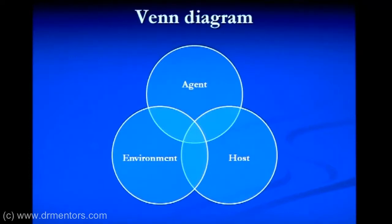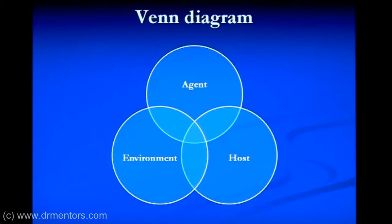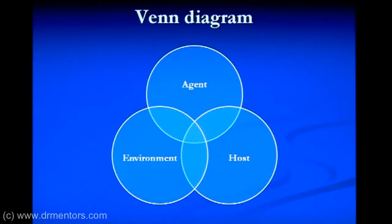This is a Venn diagram, where some factors are related to individual circles and some factors are common — the overlapping of circles indicates those common factors. Here, an epidemiological trial is shown with agent, host, and environmental factors. In the center where all three circles intersect, that shows the occurrence of disease. Just the presence of agent, host, or environment alone is not sufficient; agent and host, agent and environment, or environment and host together are also not sufficient. Only when all three interact together in the center does it lead to disease.